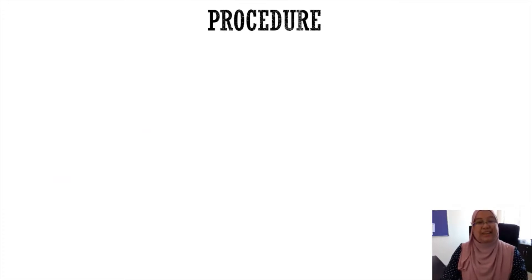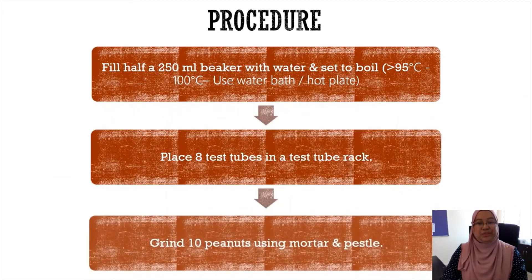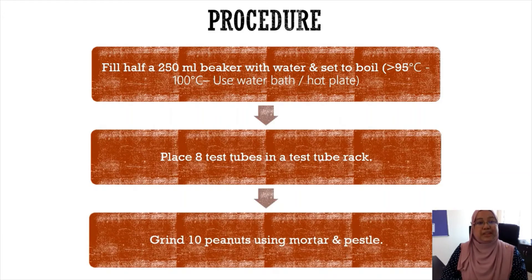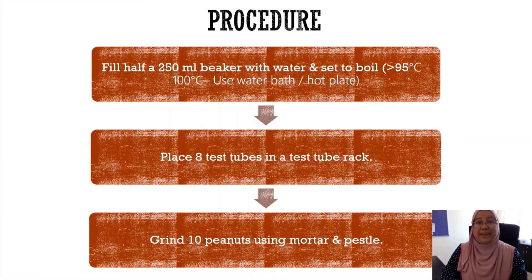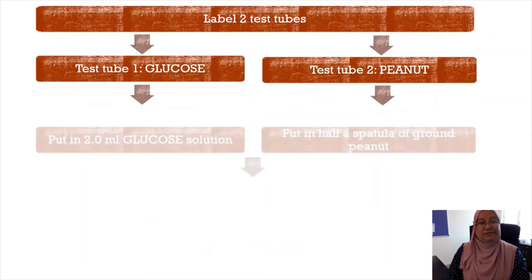Now let's look at the procedures. Fill half a 250 ml beaker with water and set it to boil. Make sure the temperature must be above 95 degrees Celsius. Place eight test tubes in a test tube rack. Grind 10 peanuts using a mortar and pestle.